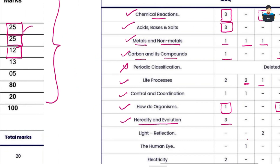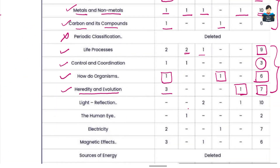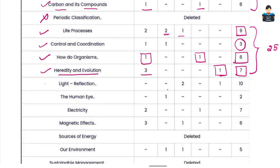Natural phenomena in this unit will cover all chapters: Light Reflection and Refraction chapter, Human Eye and Colorful World chapter. The mark allotment is 13 marks. In this range, we have 1 or 2 mark questions.